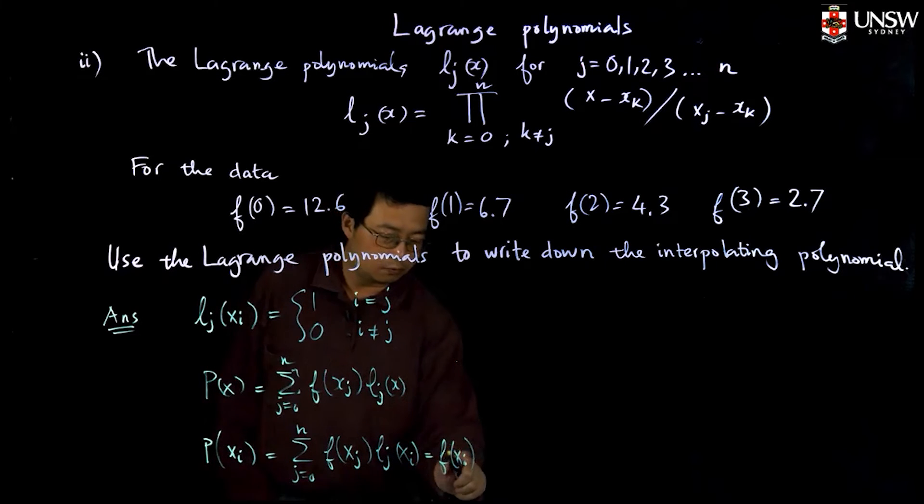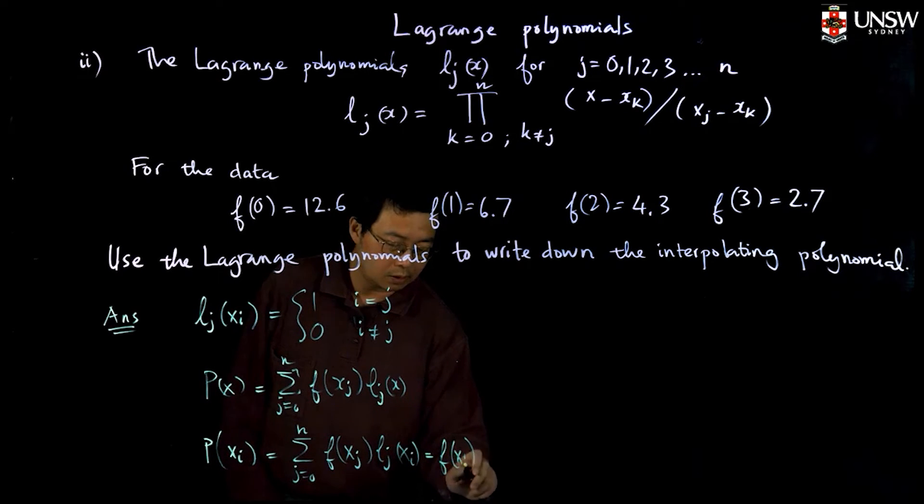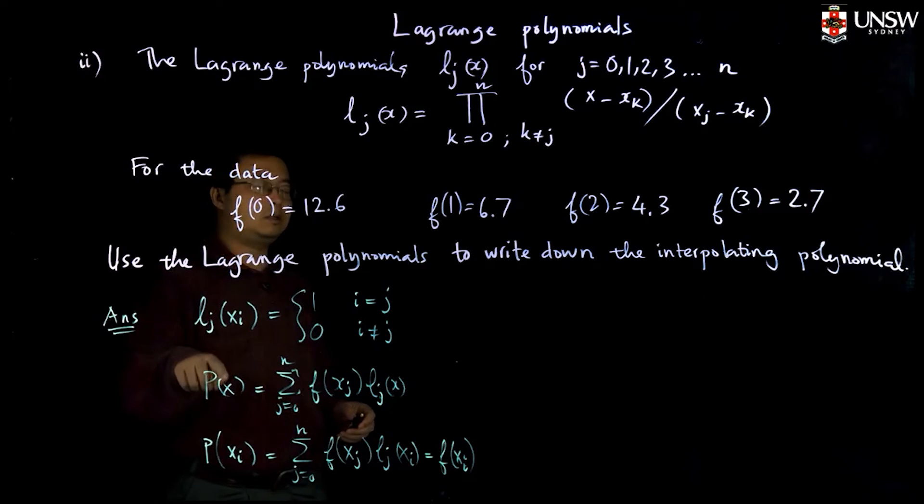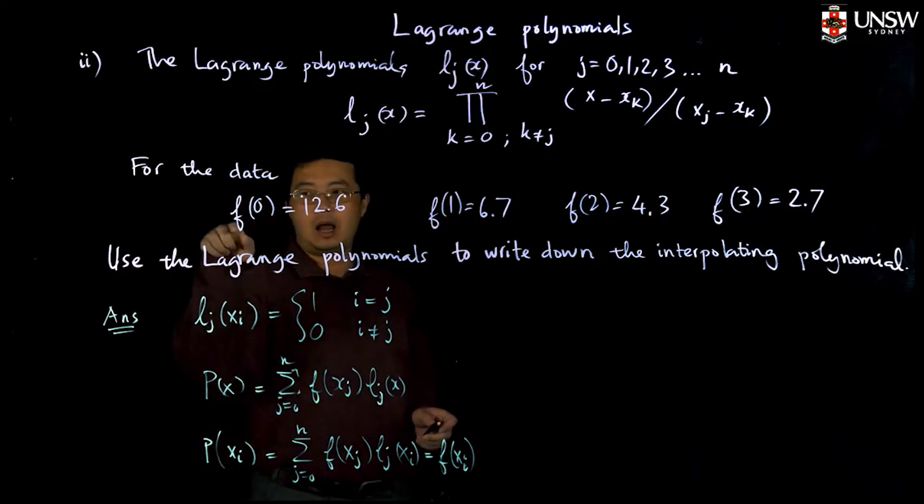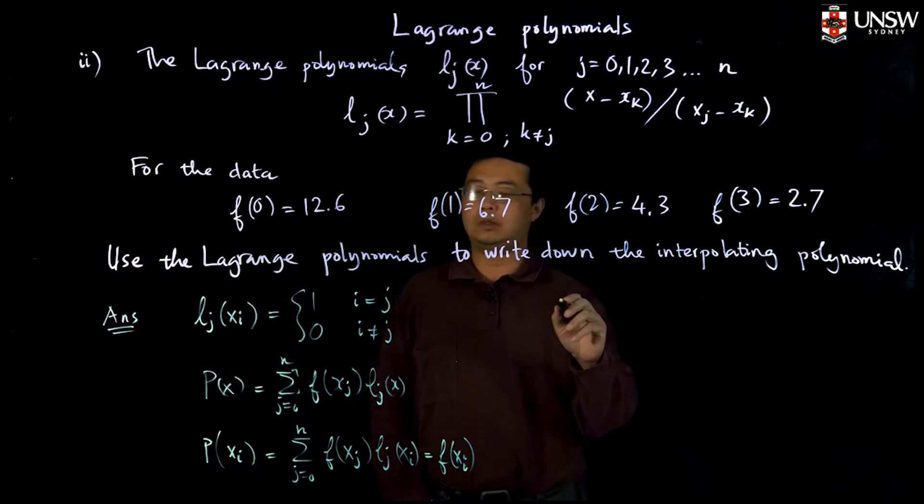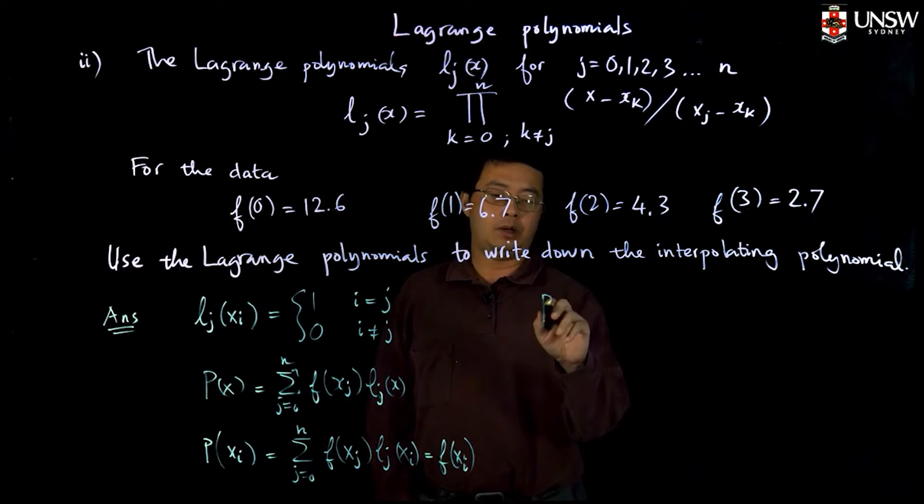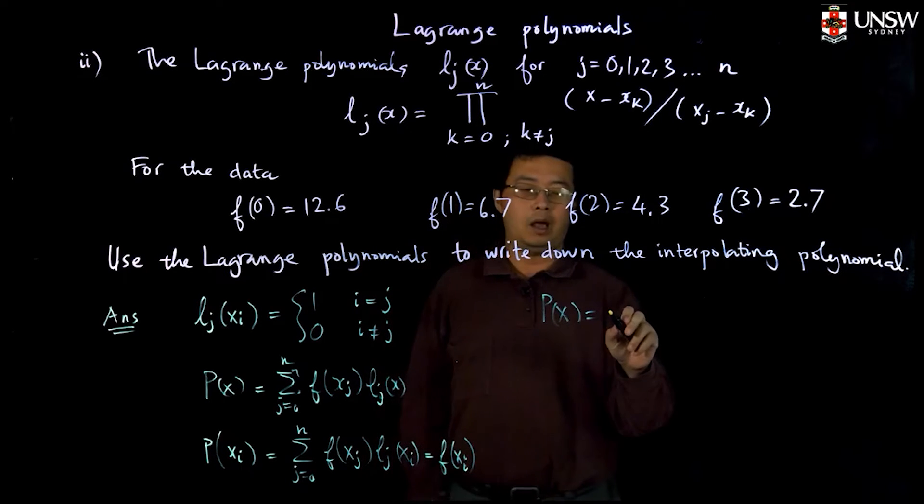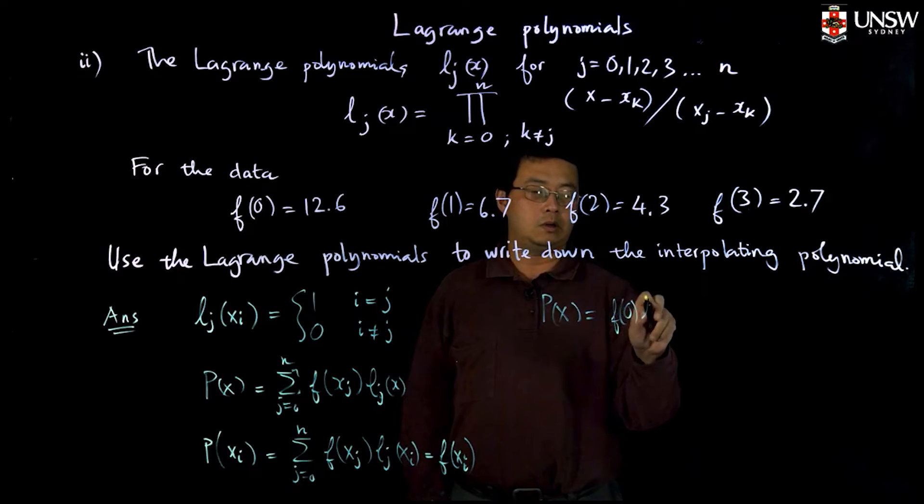This is true for all x_i, so therefore this polynomial interpolates the data. Now we use it for this problem, so the interpolation polynomial is P(x) equals f0 times l0 plus f1 times l1 plus f2 times l2 plus f3 times l3.